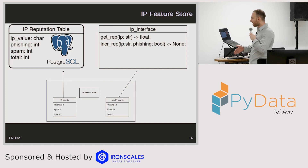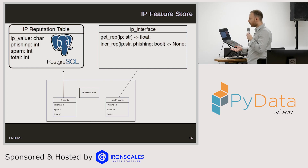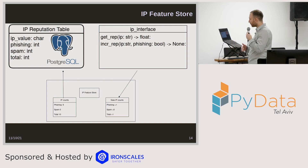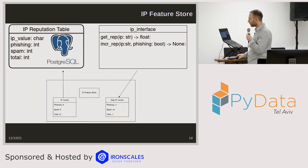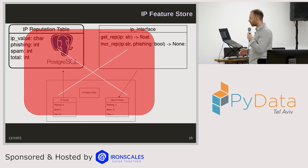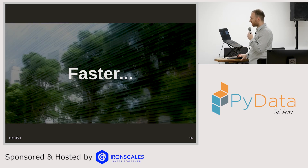So how do we do this in real time? Imagine we have a feature store — basically a class with two methods: get_reputation, which takes a string and returns the reputation of that IP address, and increment, which adds new counts to the table — phishing plus one, total plus one. We would save that to a Postgres table with four columns: IP value, phishing count, spam count, and total count. But there's a problem with this approach given the amount of data. If we're talking about 5,000 emails per second, inserting one at a time into a relational database is not the best approach.